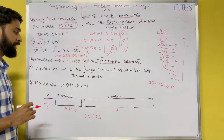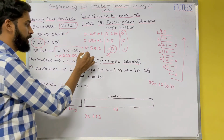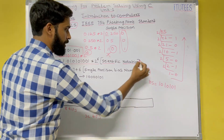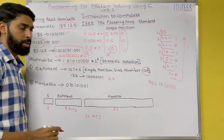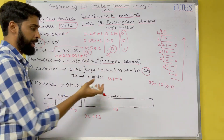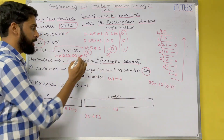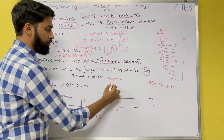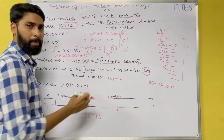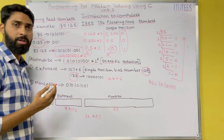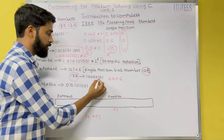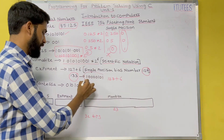The exponent value here is 6. For single precision, the default bias number is 127. Since the exponent is positive, we add 6 to 127 to get 133. If it were negative, we would subtract. Now convert 133 to binary, which gives us 10000101. This is our stored exponent field.